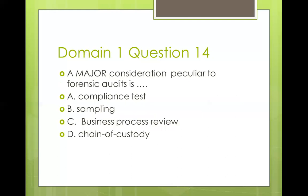Question fourteen: a major consideration peculiar to forensic audits is: compliance testing, sampling, business process review, or chain of custody. Options A, B, and C are common to most types of audits — environmental, IS, and financial audits alike. What is unique to forensic audits is chain of custody, because you must preserve evidence for presentation in a court of law and demonstrate that evidence has not been tampered with before the jury. So the answer is D — chain of custody.